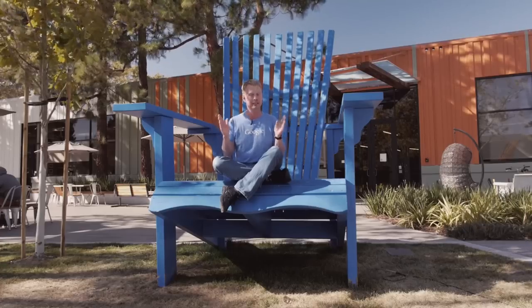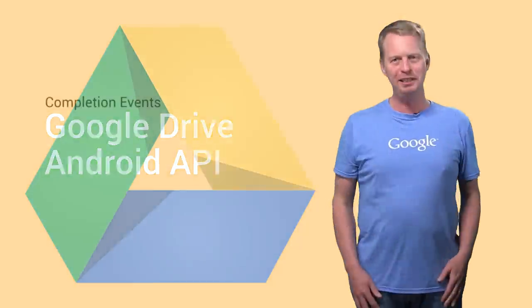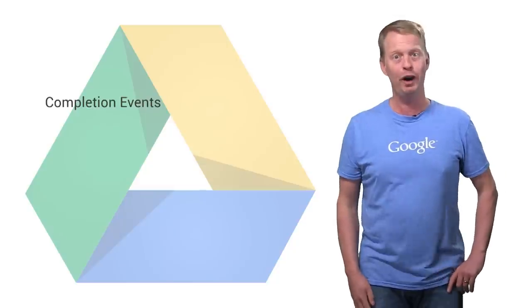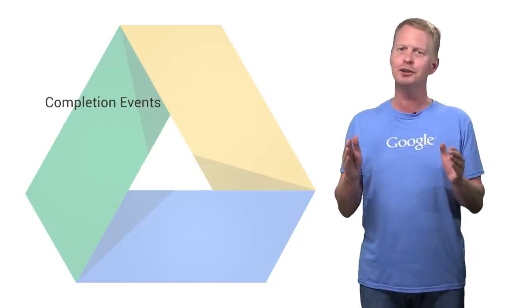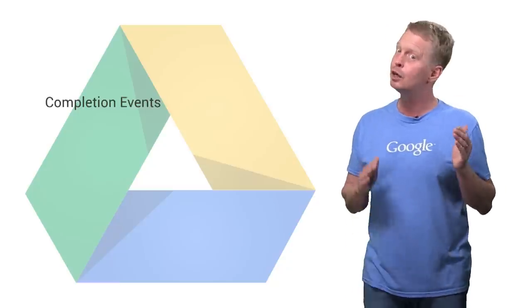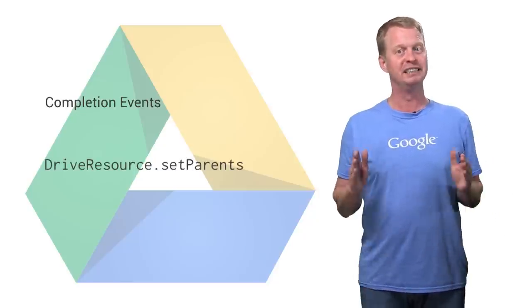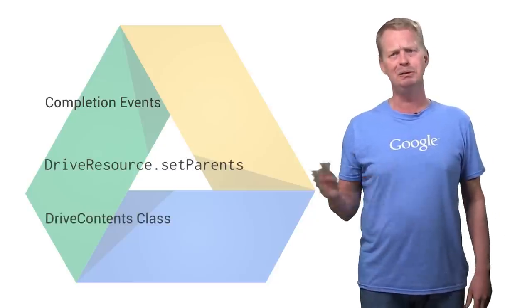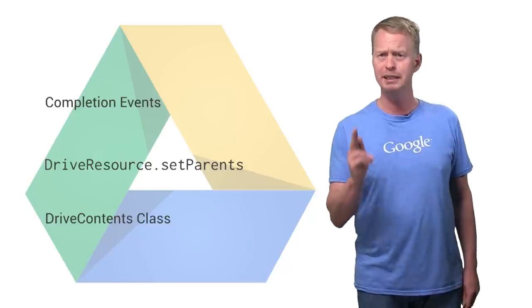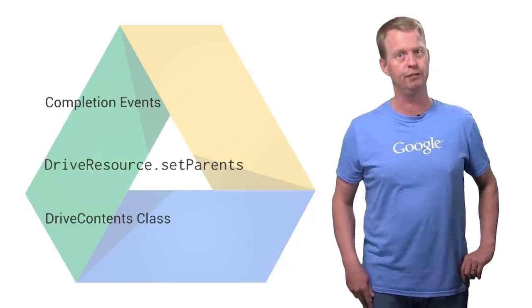Let's check out Google Play Services 6.1 and all the new features we've added. Starting off with the Google Drive Android API. This release includes completion events which allow your app to get notified when actions are committed to the server, and this also makes it possible to respond to conflicts in case there are parallel updates. DriveResource now has the method setParent, which allows you to programmatically organize files and folders.